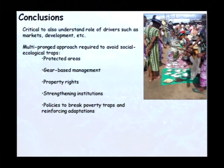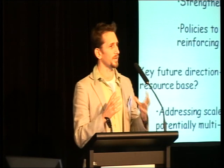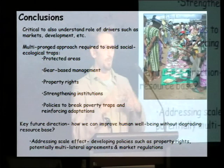To wrap it up, there are a couple of key points. We do understand the role of human population density, but it's also critical to understand the role of other drivers such as markets and socioeconomic development. We're going to need a multi-pronged approach to avoid and get through these social-ecological traps. There is no panacea — but elements of protected areas, property rights, strengthening institutions, and policies to break poverty traps and reinforcing adaptations are going to be critical. The key future challenge is: how can we improve human welfare without degrading our resource base? And how can we put policies into place so that our solutions at one scale don't become our problems at a different scale?